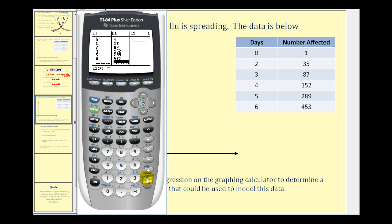Before we graph the scatter plot, we have to set up our window to make sure these data values will show on the screen. We'll press the window key. Notice that the X values go from zero to six. So I'm going to have the X axis go from negative one to seven. Scale it by ones. Then the Y values go from one to 453. So I'm going to scale the Y-axis from negative 50 to 500. And I'll scale it by 50s.